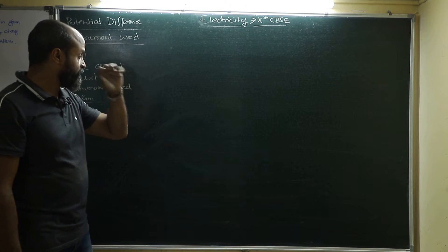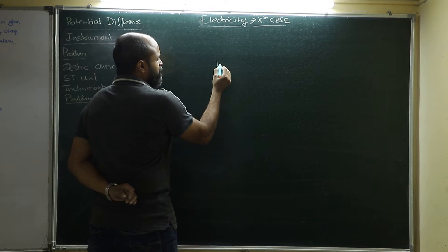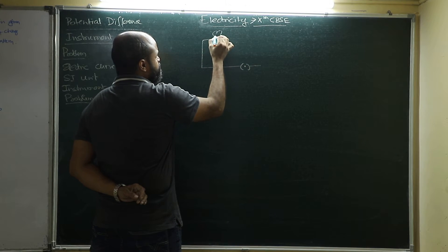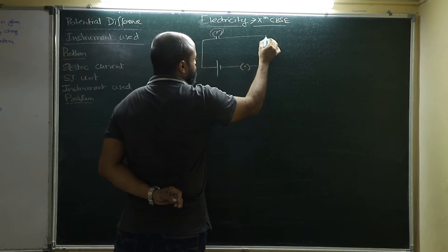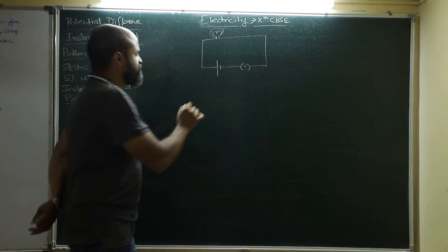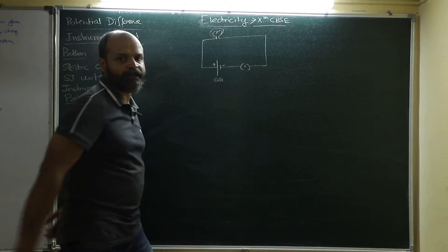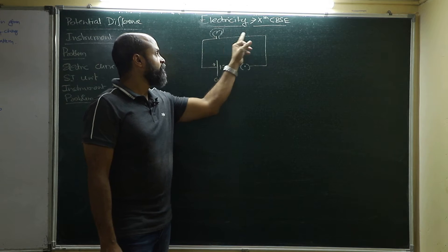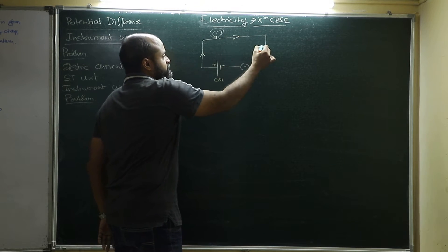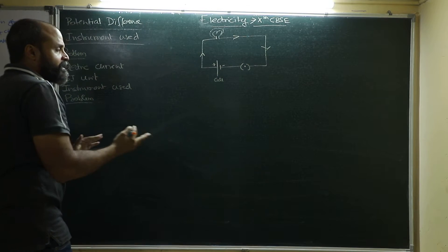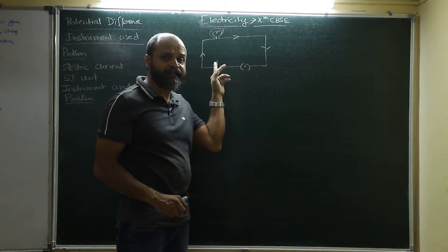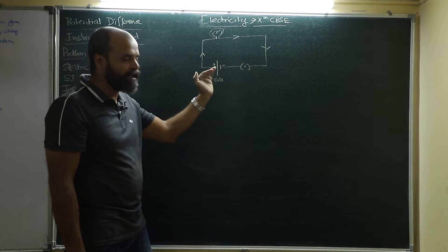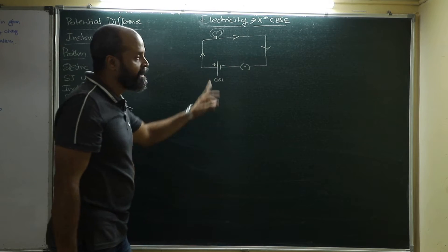We will continue with potential difference. To understand potential difference, we will have a circuit drawn like this — basically an electric circuit. I will explain the components of the circuit in detail, but just for now, this is a cell. A cell is represented like this — this will be its positive terminal and this will be its negative terminal. When we put the switch on, electricity flows from the positive to the negative terminal, because there is a potential difference between these two terminals of the cell or battery.